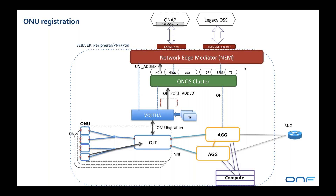The validation can be based on pre-provisioned data inside the NEM or by interacting with an external OSS system to validate the serial number of the ONU. NEM has the choice to either allow or deny that ONU onto the network — it can kick it off if it decides it's invalid or appearing in the wrong place. Assuming it's valid, the ONU is connected but there's no provisioning of data traffic yet.